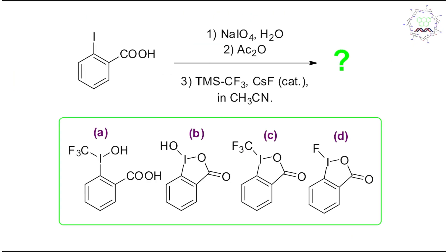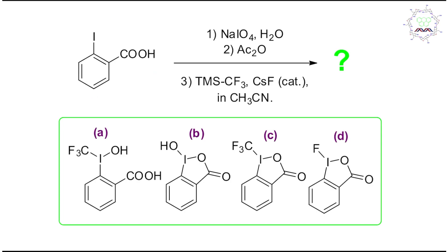I believe you have tried by yourselves — now it's my turn to give you the right answer. This reaction is a multiple-step reaction on 2-iodo-benzoic acid. If you look at this molecule, there are actually three types of reaction possible: one reaction is on this carboxylic acid group carbon, second reactivity you can expect from this iodine, and third reactivity you can expect from the benzene ring aromatic ring.